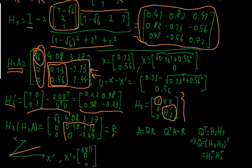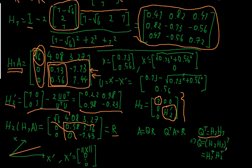So now we have our upper triangular matrix R. Remember that A equals QR, and Q transpose times A equals R. That implies that applying H1 and H2 to A gives us R, and that Q transpose equals H1 times H2. So Q is equal to the transpose of the product H1 times H2, which equals H2 transpose times H1 transpose — from right to left.